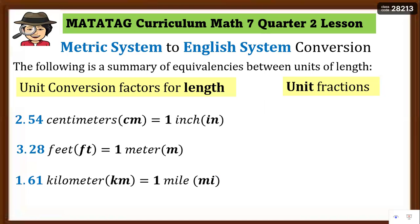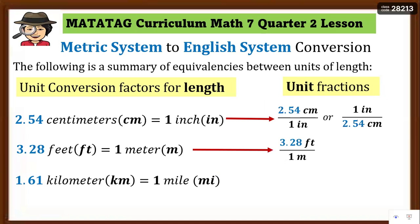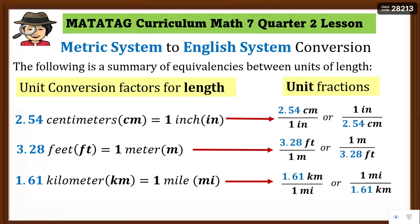So ngayon, meron tayong unit fraction — galing po ito dito sa conversion factors natin para makapag-change tayo ng unit to another unit. Ibig sabihin, pwede nating sabihin ito na 2.54 centimeter over one inch, or pwedeng baliktad rin: one inch over 2.54 centimeter — meron tayong options kasi depende po sa hinihingi na unit ng problem. Pangalawa: 3.28 feet over one meter, or one meter over 3.28 feet. Next: 1.61 kilometer over one mile, or one mile over 1.61 kilometer.